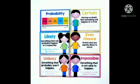We use terms such as likely, certainly, and never to describe possible outcomes. If an event will always take place, the outcome is certain. If an event can never happen, the outcome is impossible, or we say never. If an event has a good chance of happening, the outcome is likely.